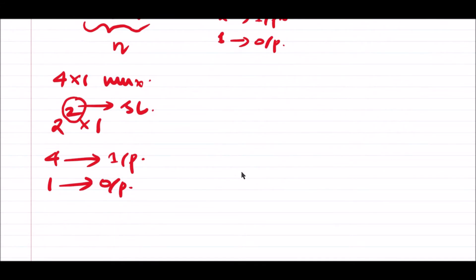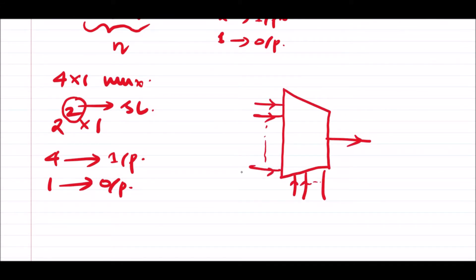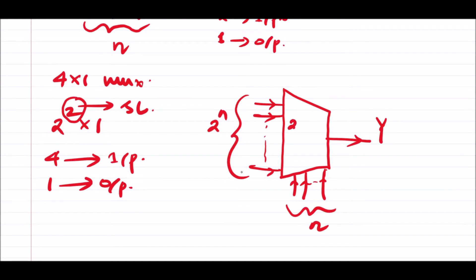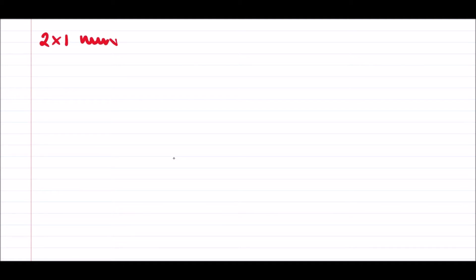The block diagram of a multiplexer can also be drawn with 2^n number of inputs on one side, n number of selection lines at the bottom, and the output on the other side — this is a 2^n cross 1 mux. The most basic multiplexer is the 2x1 mux. For a 2x1 multiplexer, the number of inputs will be 2, the number of outputs will be 1, and the number of selection lines will be 1.